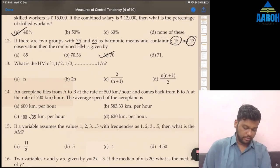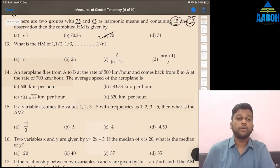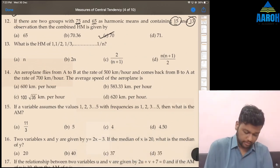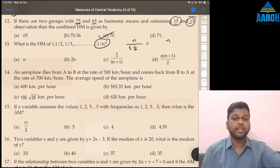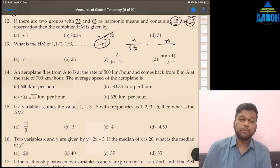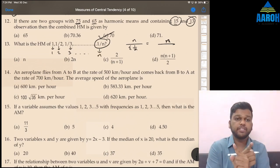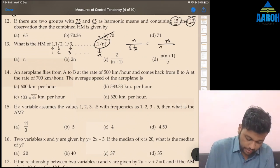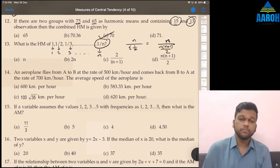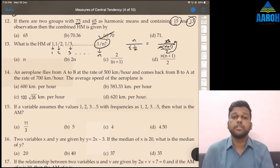What is HM of 1, 1 by 2, 1 by 3 up to 1 by N? This is a good question. HM is N upon summation 1 by X. N is going to be N because there are N terms: 1, 1 by 2, 1 by 3 up to 1 by N, divided by summation of reciprocals. The reciprocals will be 1, 2, 3 up to N. If we take sum of reciprocals, it's 1 plus 2 plus 3 plus 4 up to N, which is sum of first N natural numbers, N into N plus 1 upon 2. So we can cancel N and N, take 2 in the numerator. Answer will be 2 upon N plus 1, which is option C.